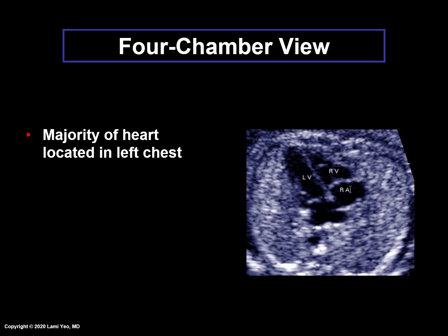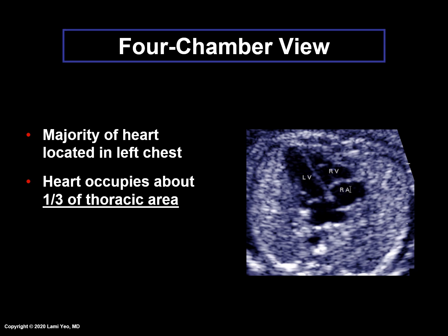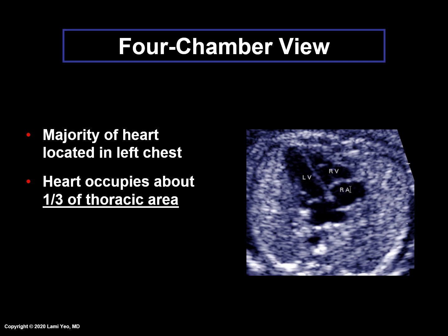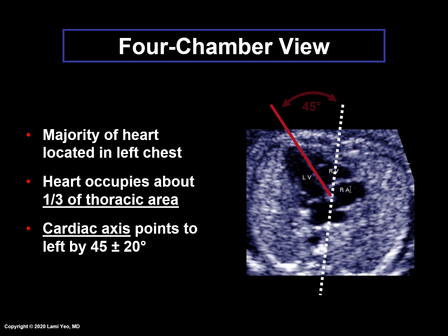Four-chamber view. The majority of the heart should be located in the left chest in a normal anterior left position. The heart should occupy about one-third of the thoracic area. One of the ways to determine this visually is to imagine an outline of the fetal heart. If this same outline can fit into each of the lung fields, then the heart occupies about one-third of the thoracic area. The cardiac apex should point to the left by 45 plus or minus 20 degrees in relation to the anterior-posterior axis of the chest.